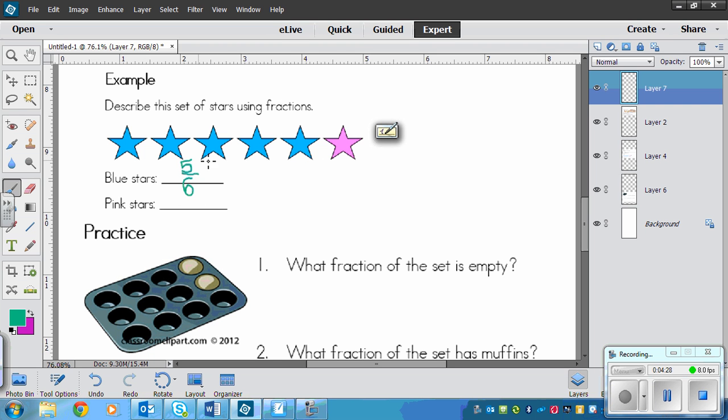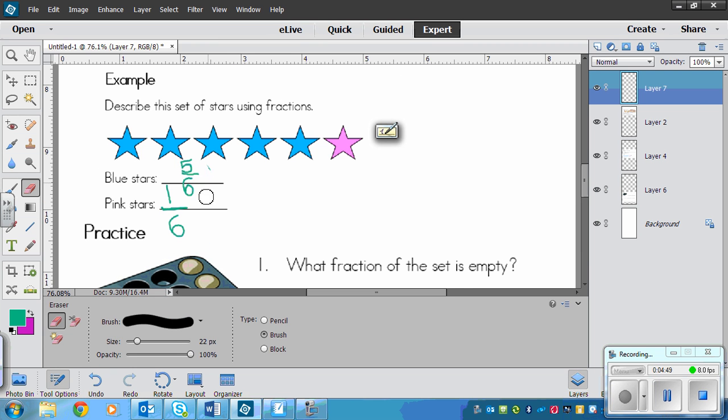Then pink stars is going to just be the opposite. Even if someone took these stars away and I forgot what they looked like, I could use this fraction right here to find the answer. I know there's only blue stars and pink stars, and I know that five of them are blue, so I could subtract five from six to find that there is one pink star out of six stars. You can use math or counting sometimes.